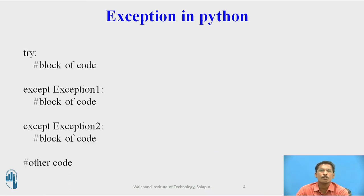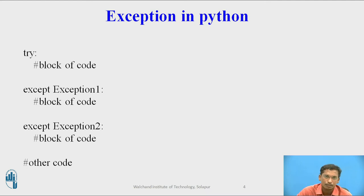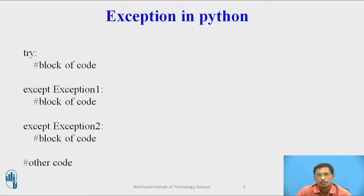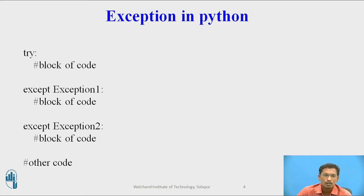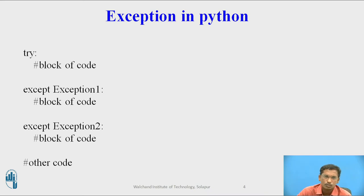Here is the syntax for the try and except block. There is generally a single try block and multiple except blocks may be present for a particular try block. After the try keyword and colon, all statements you think may cause an exception are placed inside the try block. Then except with exception 1 and its code block, then except with exception 2 and its code block. Multiple except blocks may be present, followed by other code.